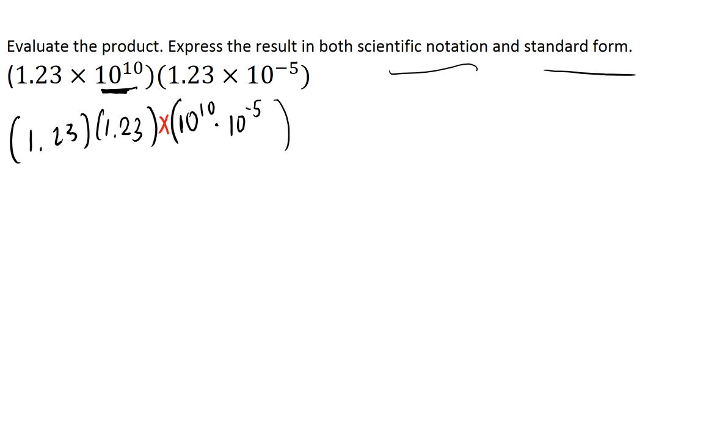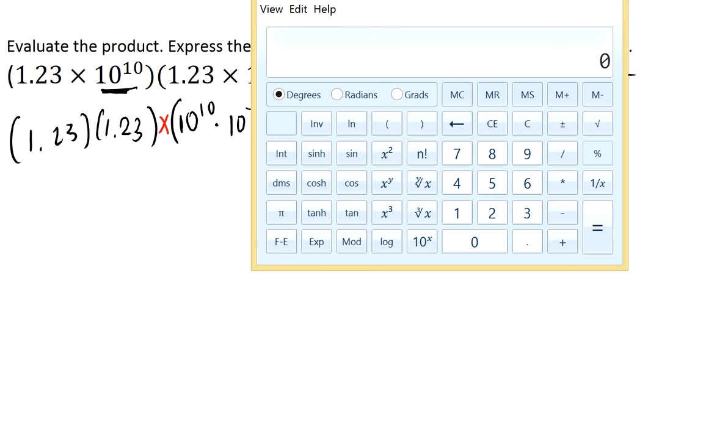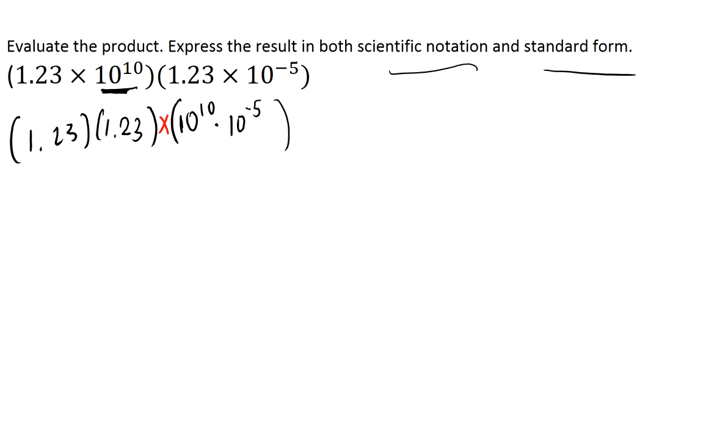So here we're going to multiply 1.23 by itself. I'm going to open a calculator here. And 1.23 times 1.23. So that's 1.51 and a 29 here. Times, I'm going to move it down because of the scientific notation.